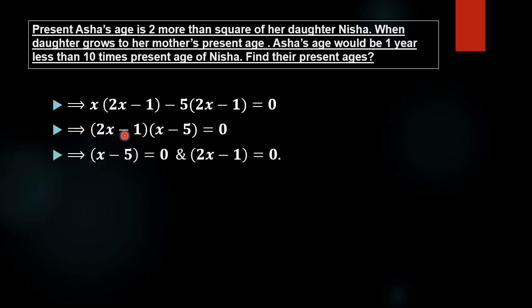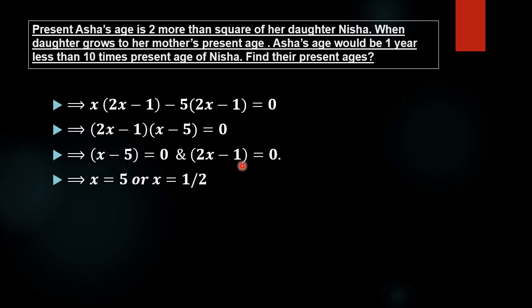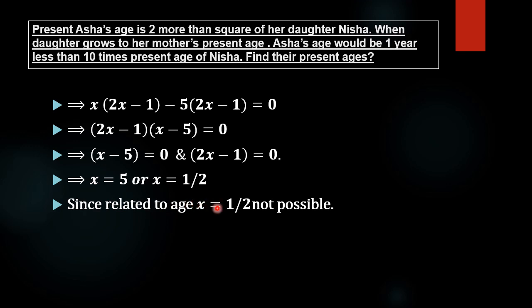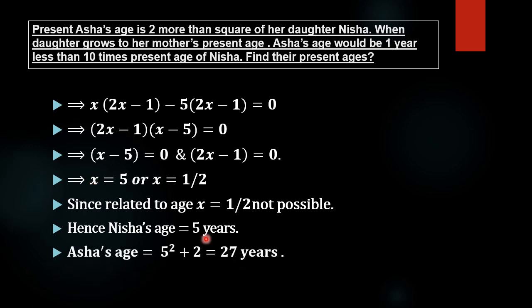Setting each factor to zero: if x minus 5 equals 0, then x equals 5; if 2x minus 1 equals 0, then x equals 1/2. Since the problem is related to age, x equals 1/2 is not acceptable. Hence, Nisha's present age equals 5, and Asha's present age equals x² + 2, which equals 5² + 2, equal to 27.